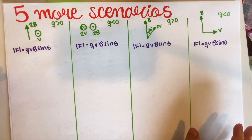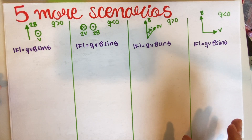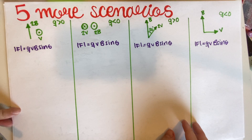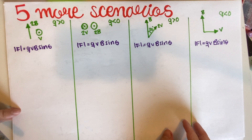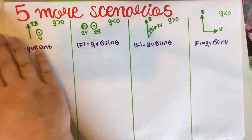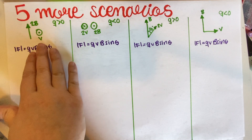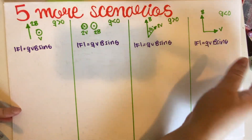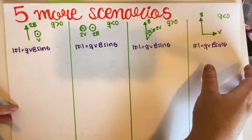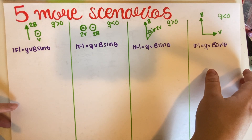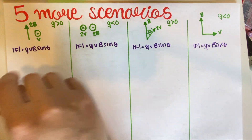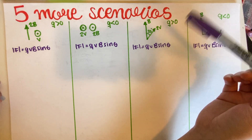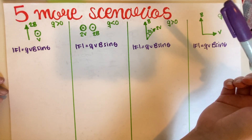We'll get to part B in a second, but we'll do this first. This is a somewhat easy problem because it's already telling us the direction of the magnetic field and the velocity directly. All we have to do is use our right-hand rule a bunch of times — we'll figure out the magnitudes using the equation and the direction using the right-hand rule.